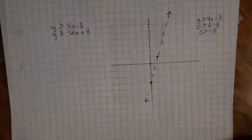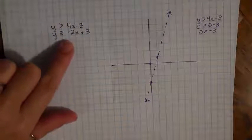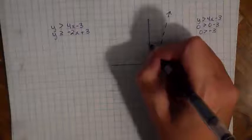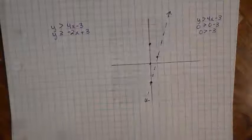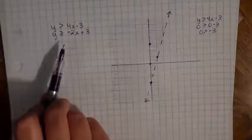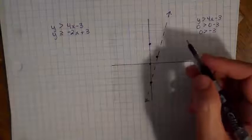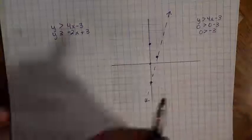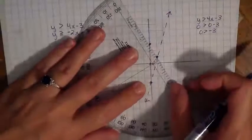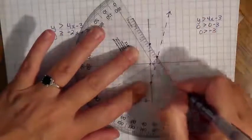Then I graph the second line: y is greater than or equal to negative 2x plus 3, so I'll start at positive 3. Since I have a negative 2, I'll go down 2 and over 1. This is a greater than or equal to, so I can draw a solid line.